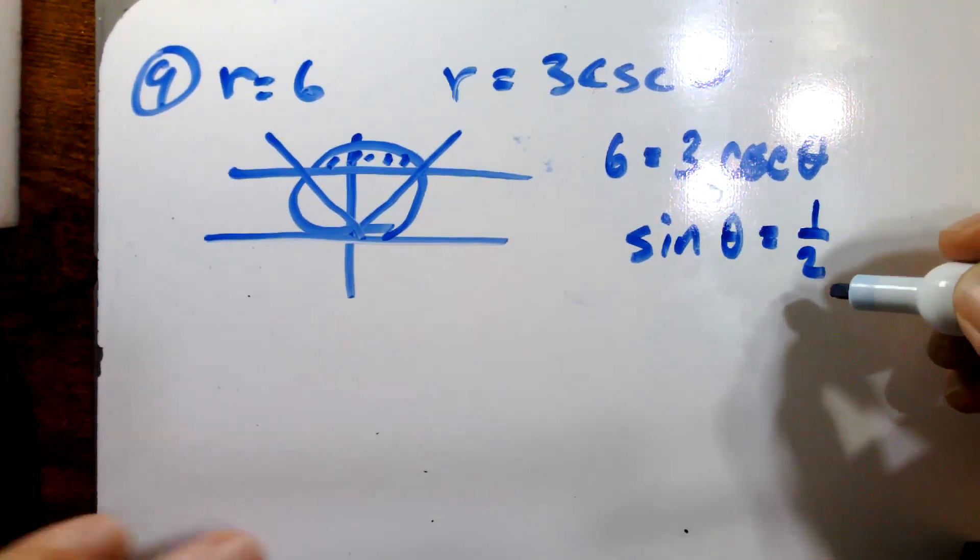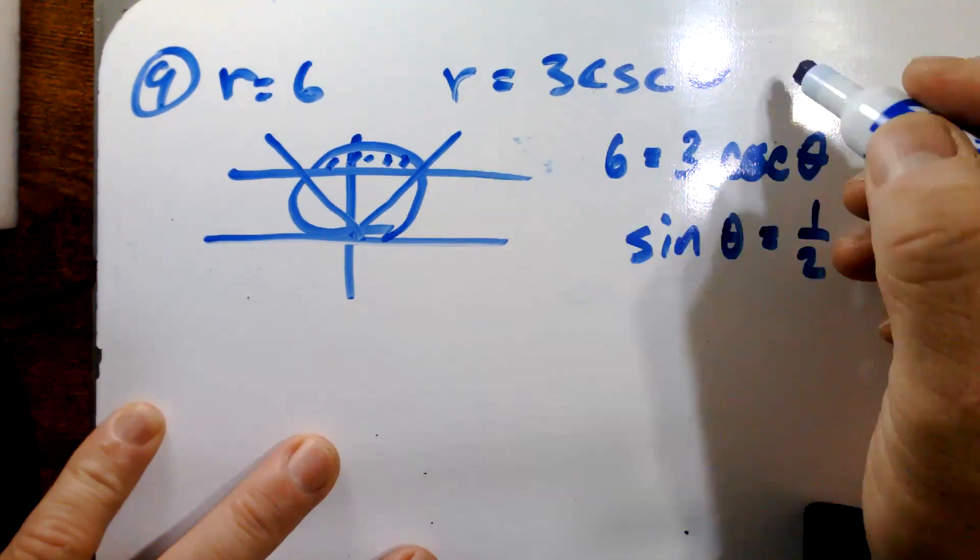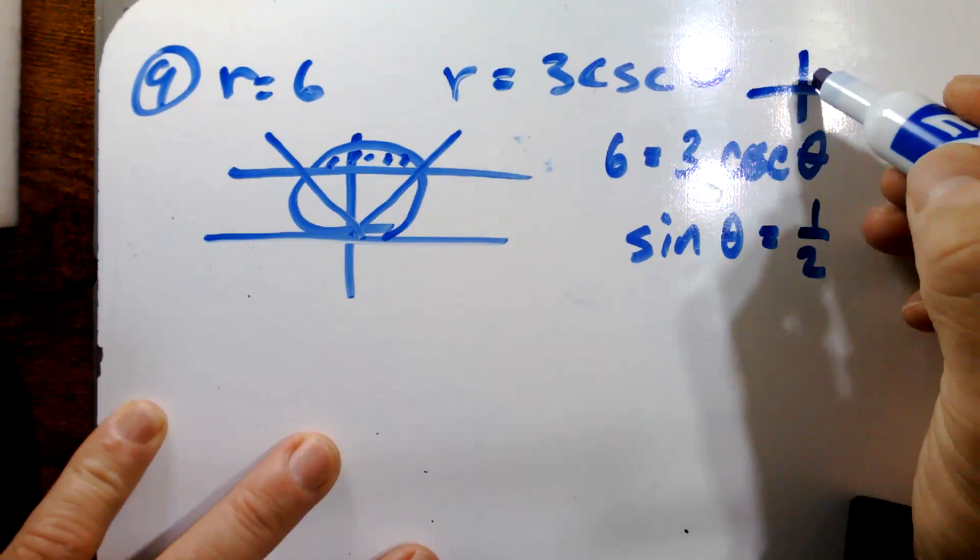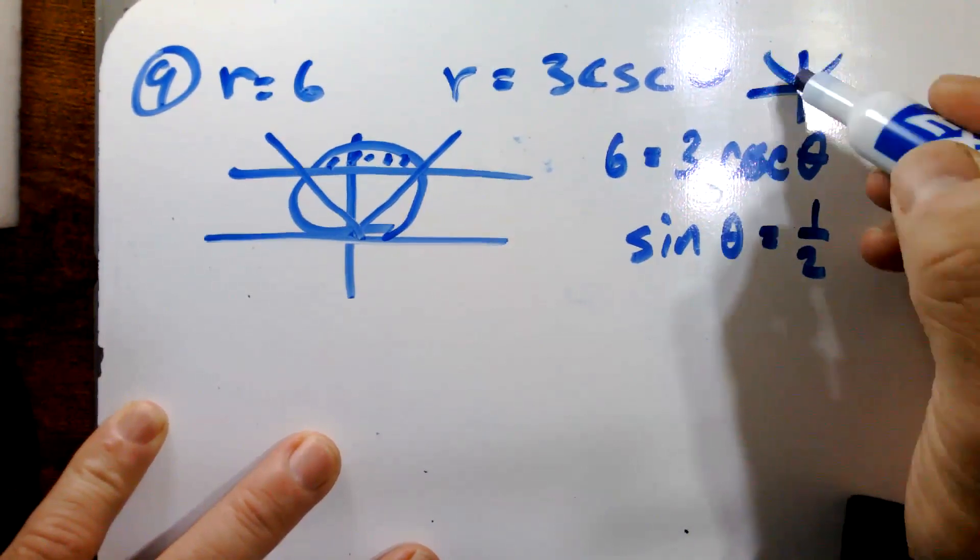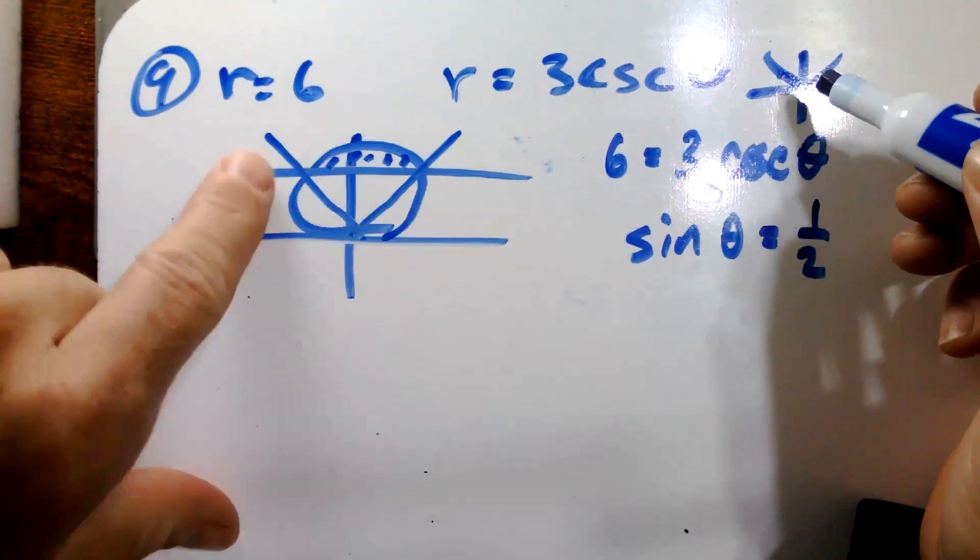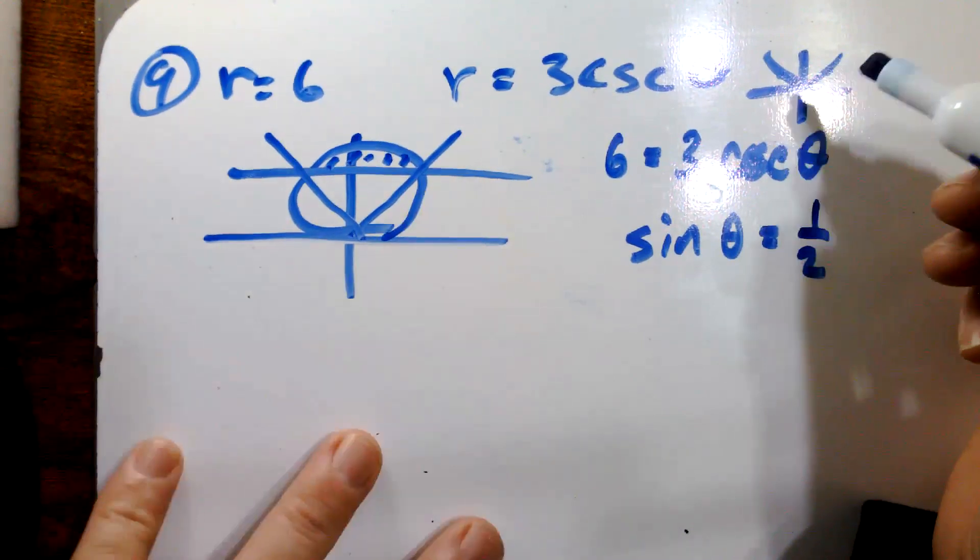And just like we did before, if you think about it, we could draw it right here. Where is sine positive? Sine is the y values. That's in quadrant one and quadrant two, which is perfectly in connection with what we were seeing here with our graph.